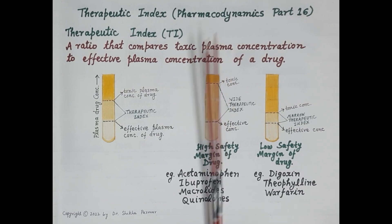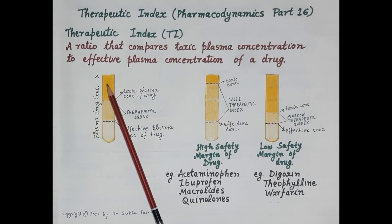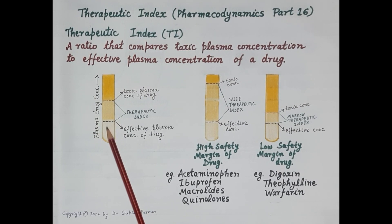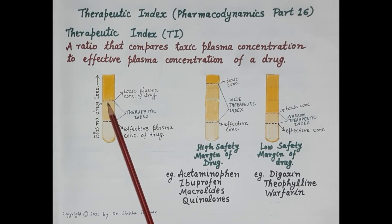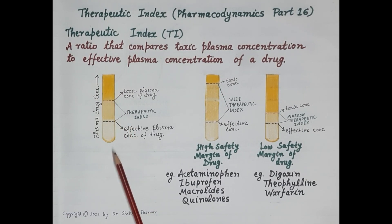Look at this figure — the yellow color liquid is the plasma. The figure depicts a gradual increase in the plasma drug concentration, depicted by the gradual increase in yellow color. This is the minimum effective plasma concentration that produces the therapeutic effect; below this the drug is ineffective. This is the minimum toxic plasma concentration that produces maximum acceptable adverse effects. As concentration increases further, the drug becomes more and more toxic and unacceptable for usage.